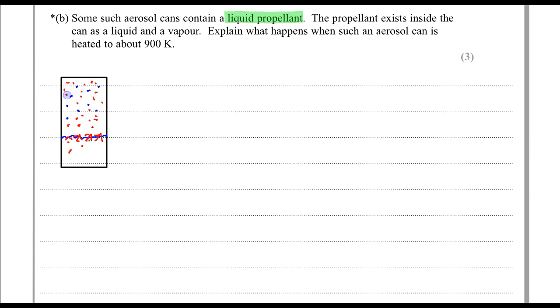And this will increase the number of gas particles in the can. So if we look back to the gas equation, PV is NKT, where N was the number of particles there.